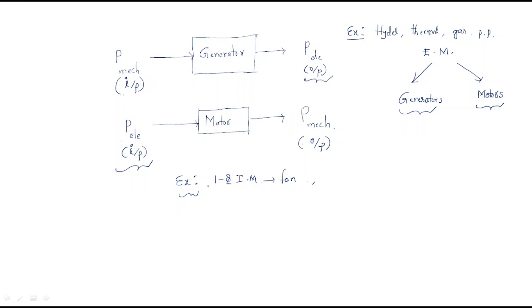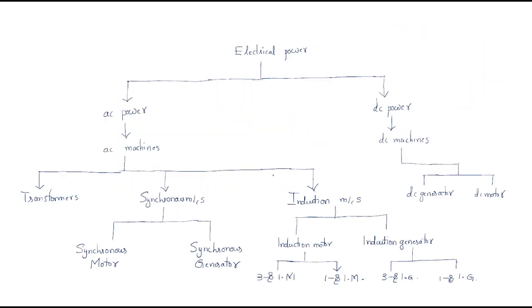Electrical machines are further classified depending on the application and requirement, based on the type of electrical power used. There are two types of electrical power: AC power and DC power. This classification leads to two categories of electrical machines: AC machines and DC machines.